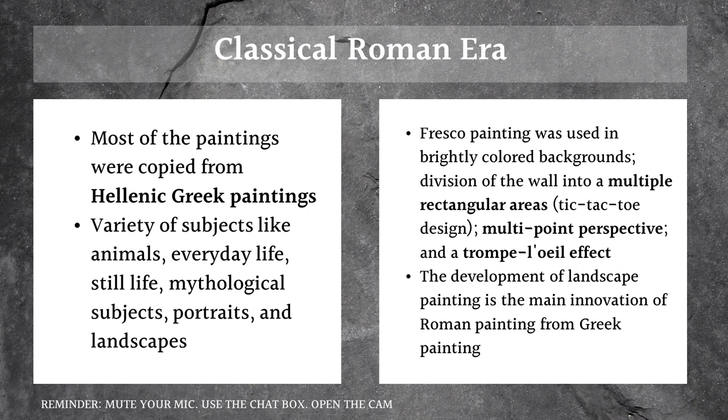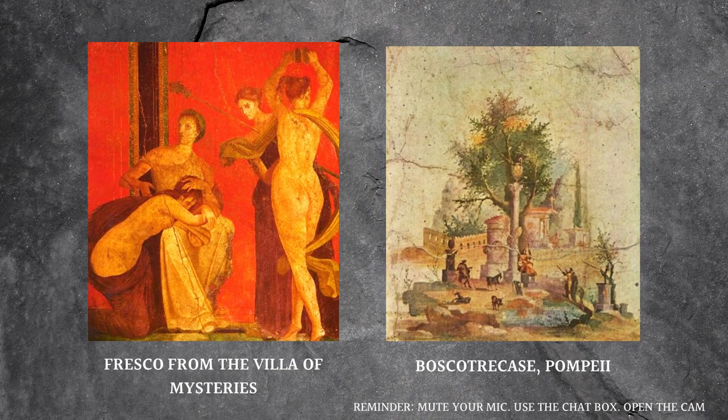The development of landscape painting is the main innovation of Roman painting compared to Greek painting. An example is a fresco painting from the Villa of Miseries, and another is the Bosco Reale, Pompeii wall painting.